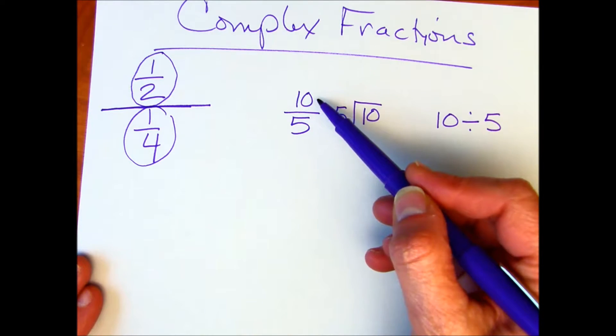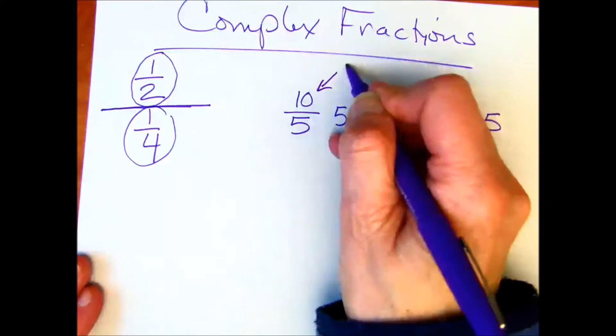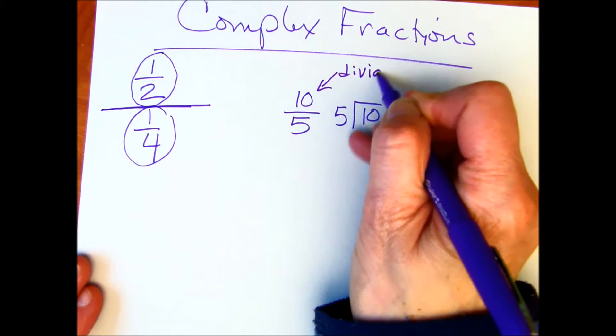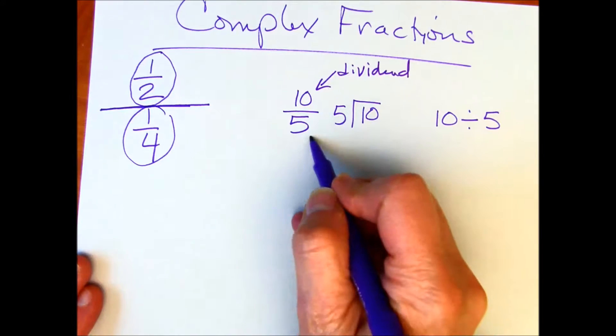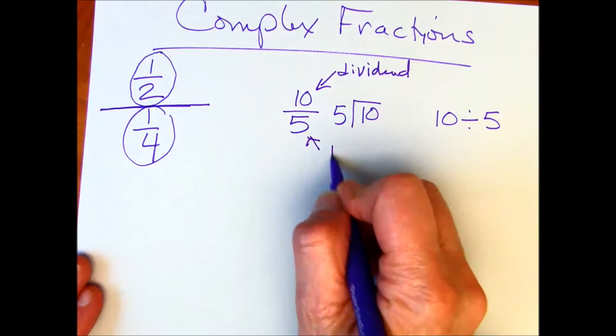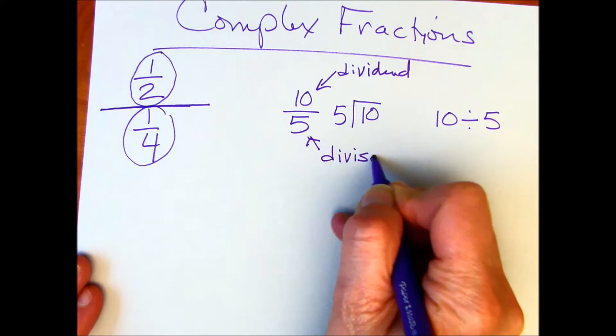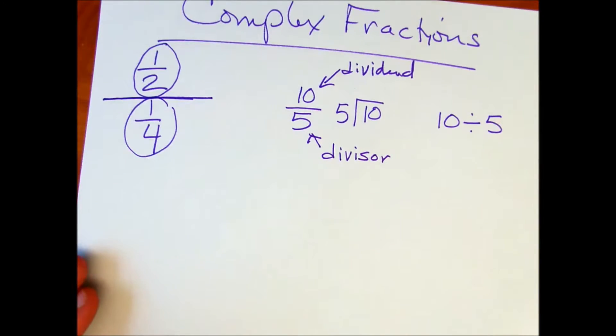So the numerator is going to be our dividend, and our denominator is also the divisor. This is what we're dividing the dividend by.